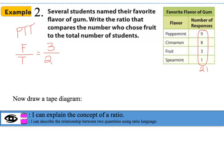I write the part-to-total ratio as fruit-flavored gum over the total: 3 over 21. The other two forms are 3 colon 21 and 3 to 21. Reducing by dividing by 3: 3 divided by 3 is 1, and 21 divided by 3 is 7. So the reduced ratio is 1 over 7, or 1 colon 7, or 1 to 7.